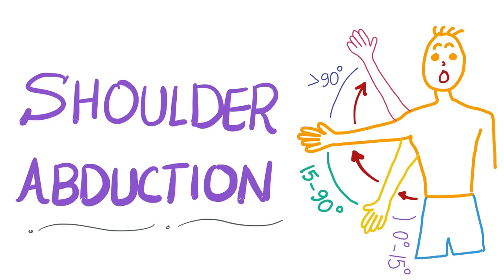Shoulder abduction occurs in steps. Different degrees are controlled by different muscles. To abduct your shoulder from the midline to 15 degrees, there is a muscle responsible for that. From 15 to 90, another muscle. More than 90, two muscles acting together. So, what are these muscles and what will happen in cases of injury? This is the topic of today's video.